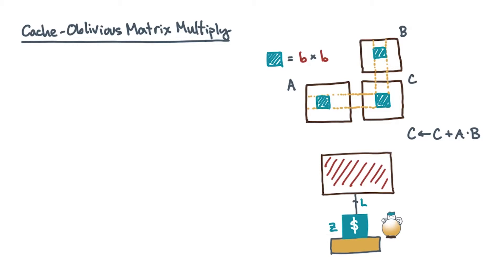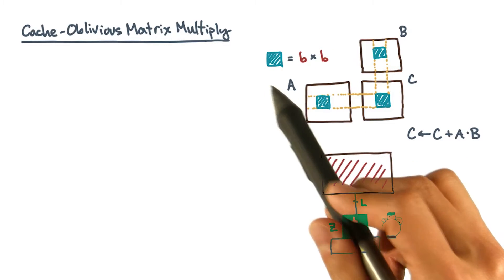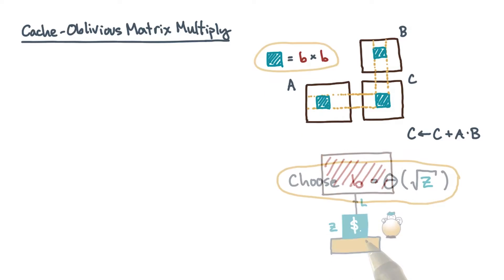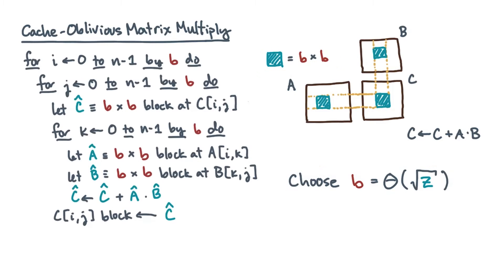An efficient cache-aware matrix multiply performs a sequence of submatrix, or block-by-block, multiplies. You choose the block size so that nominally three blocks fit in cache. The corresponding algorithm looks like this, and notice that the block size, denoted by little b, appears directly in the algorithm.